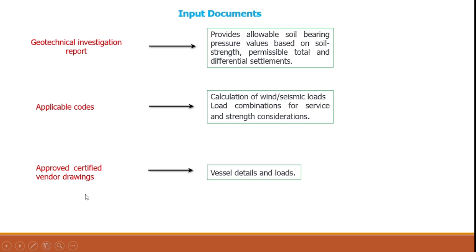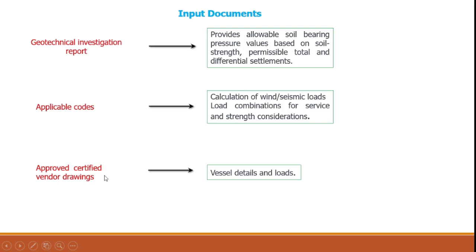The third important input is the approved certified vendor drawings. Vertical vessels are fabricated and supplied by a vendor, so all vessel details — diameter, height, connection details, platforms, connected piping, and loads — must come from these drawings. Ensure the vendor drawing used is approved and certified by the concerned authorities.